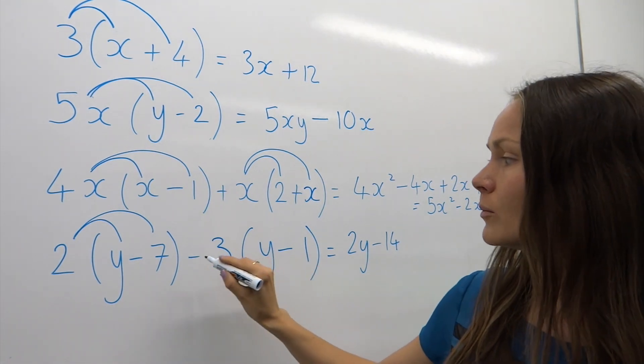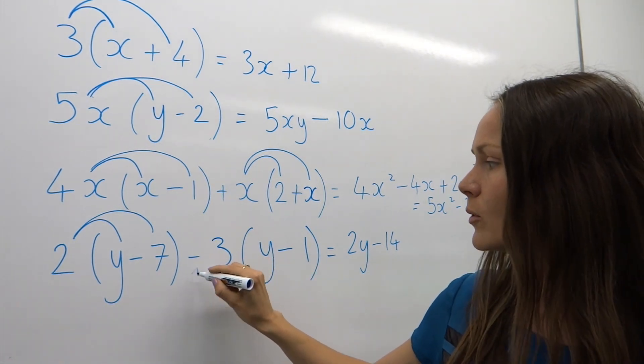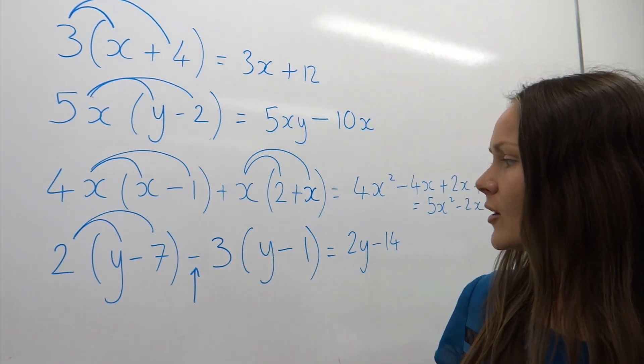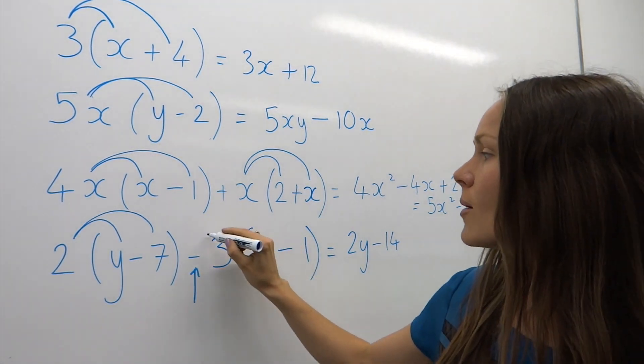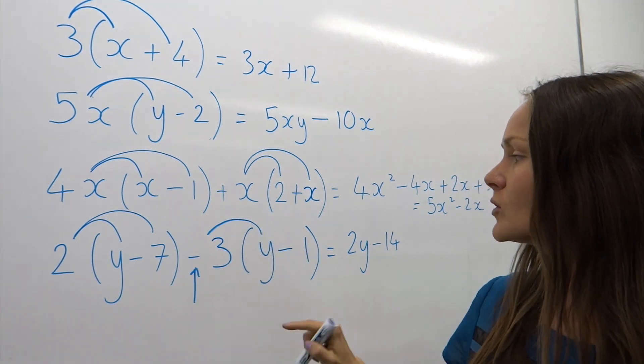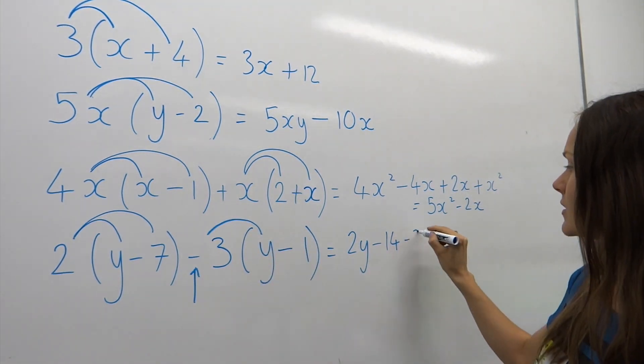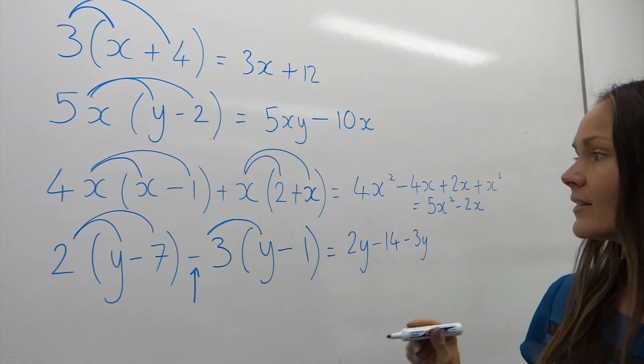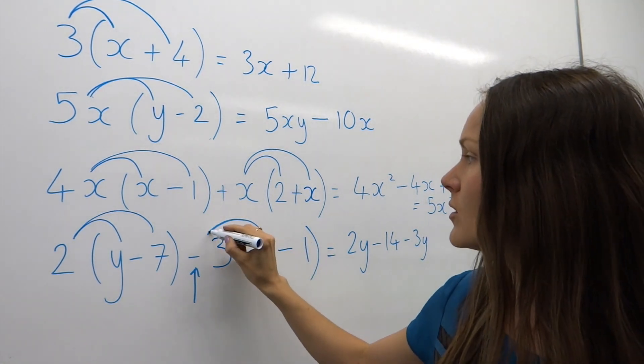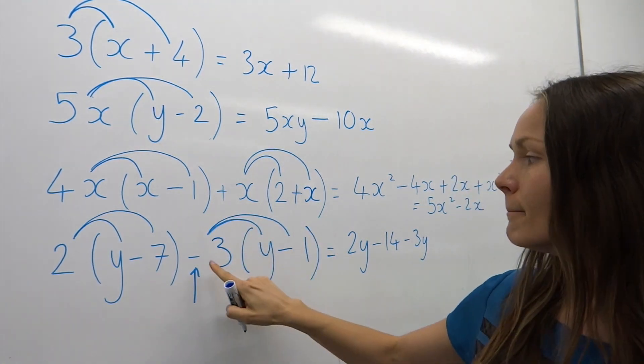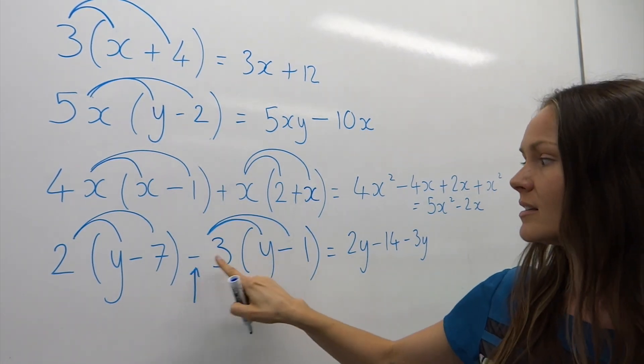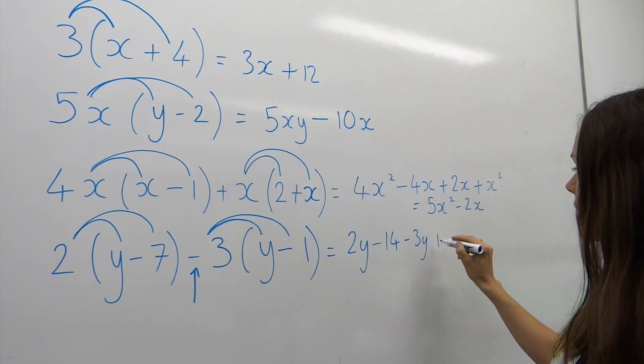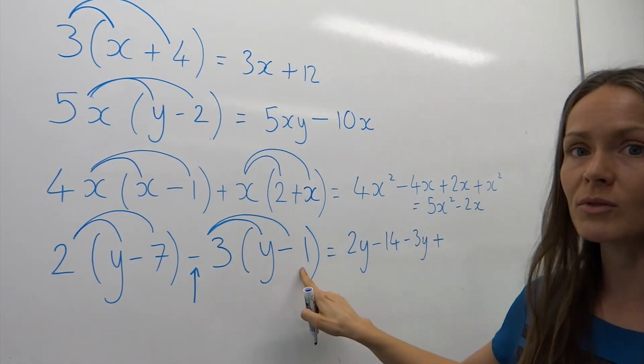Onto the next bracket. Watch out for this minus—lots of people forget about that, and then they end up getting the wrong signs in their answer. We've got minus 3 multiplied by positive y is minus 3y. And the last step—this is where lots of people get caught out. Minus 3 multiplied by minus 1: a minus times a minus is a plus, and 3 times 1 is just 3. Watch out there for that plus. Minus times a minus is a plus.